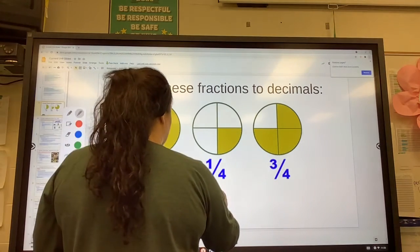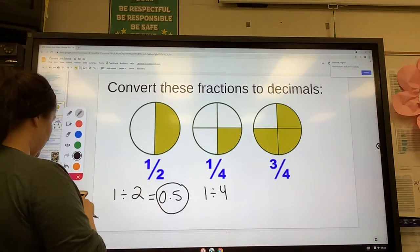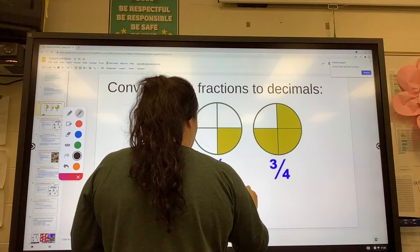Same thing, 1 divided by 4. Plug it in, 1 divided by 4 into a calculator, 0.25.